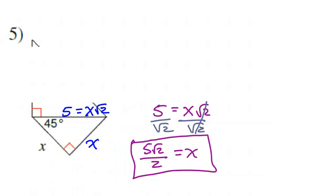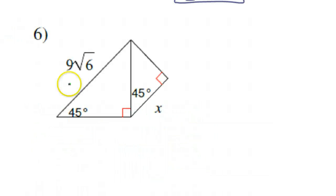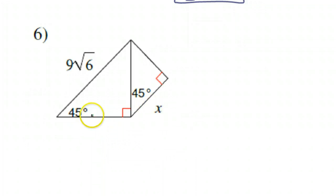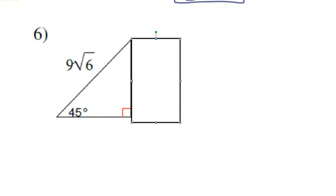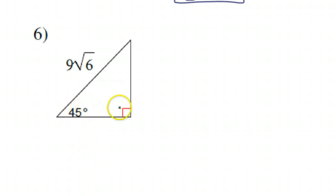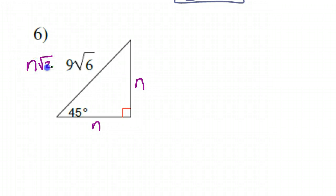That's the answer to number five. Let's find number six. It's got nine radical six — not even a radical two. Well, let's use our pattern. I'm not going to use X because X is already over there, so I'm going to use N. Let's cover the other part so it doesn't distract us. The pattern for a 45-45-90 triangle is N, N, and the hypotenuse should be N radical two.